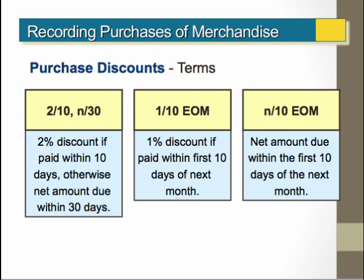You might see terms codes similar to these: 2/10 net 30 denotes a 2% discount if the invoice is paid within 10 days; otherwise the invoice is due in 30 days from the date of the invoice. The second example, 1/10 EOM, stands for a 1% discount if paid within 10 days; otherwise the invoice is due at the end of the month. The third example means the invoice is due in 10 days, which is at the end of the month.